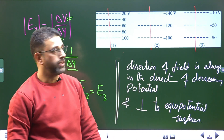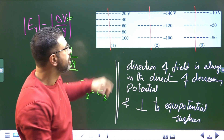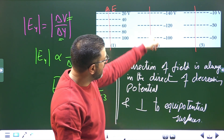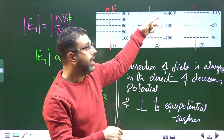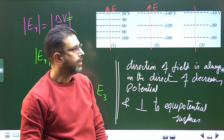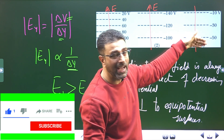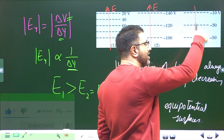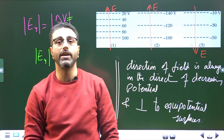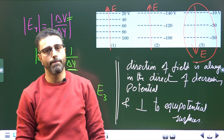In situation one, the potential decreases upward — from 100 to 80 to 60 to 40 to 20 — so the field points upward. In situation two, potential again decreases upward (−100, then −120, then −140, becoming more negative), so the field is also upward. In situation three, the potential decreases downward — from −10 to −30 to −50 — so the field points downward. The answer to Part B is situation 3.